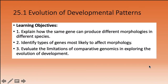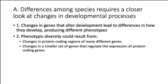Section one looks at the evolution of developmental patterns. We'll examine how the same gene can produce different morphologies in different species, identify types of genes most likely to affect morphology, and evaluate the limitations of comparative genomics in exploring evolution of development. Differences among species require a closer look at developmental processes — changes in genes can alter development, leading to different phenotypes. Phenotypic diversity could result from changes in protein-coding regions of many genes, or from a smaller set of regulatory genes.